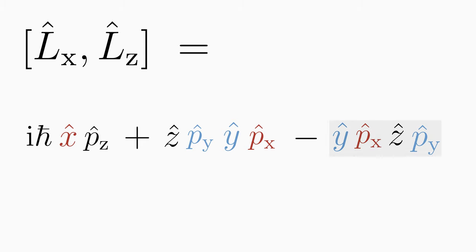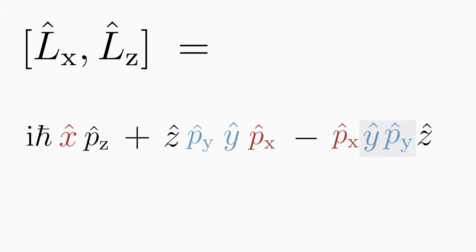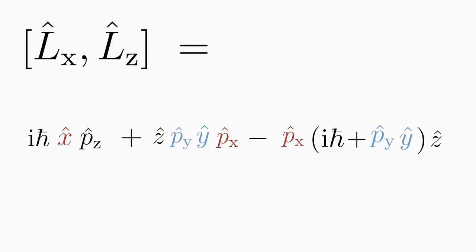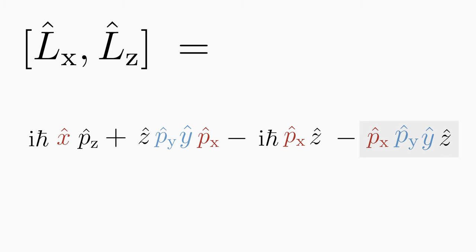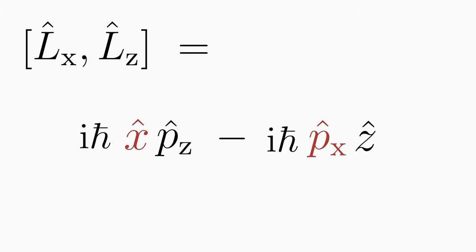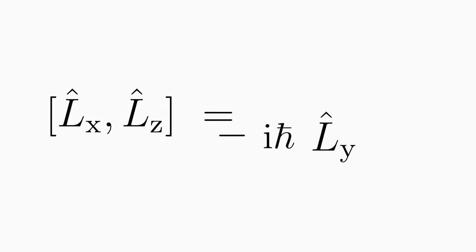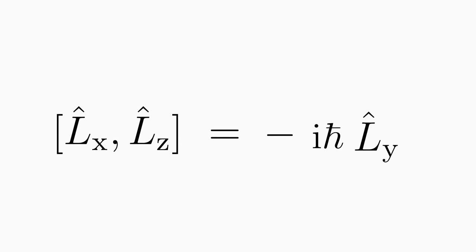Now we arrive at a term where the interchange cannot be done just like that. First, we can interchange y and p̂x, and then z with p̂y. To swap y with p̂y, we replace it with ih-bar plus p̂y·y because of the non-vanishing commutator. We multiply out the bracket. We swap z with p̂x in one term and cancel it out with the other. Factoring out ih-bar, the expression in the bracket corresponds to the l̂y operator. As you can see, the commutator between l̂x and l̂z is not zero, so it is impossible to know l̂x and l̂z simultaneously with arbitrary precision. Analogously, you can derive the other two commutators.